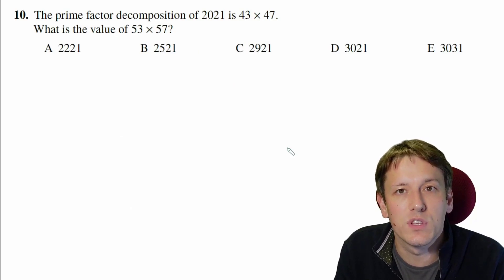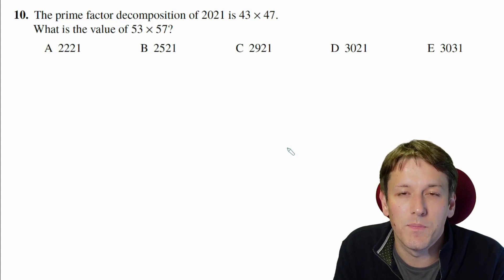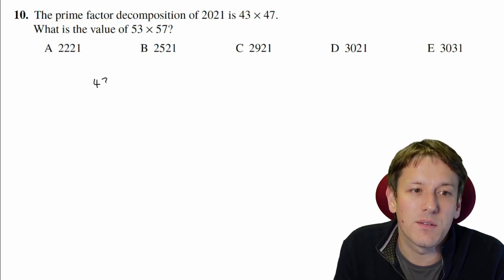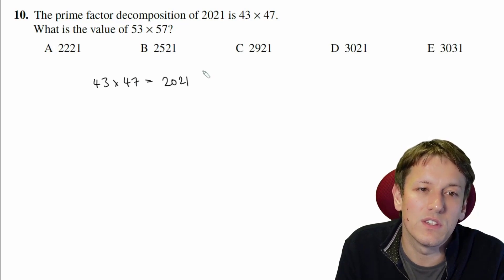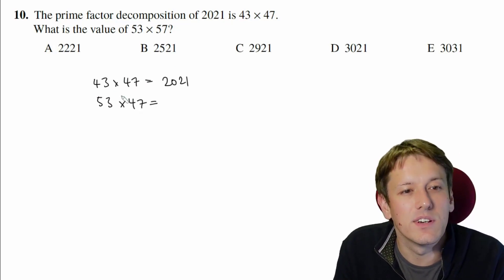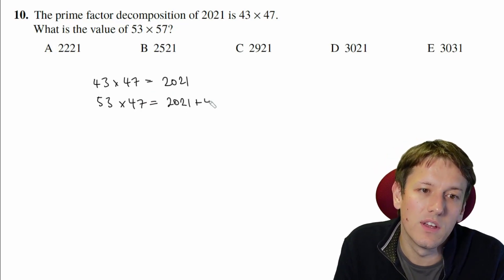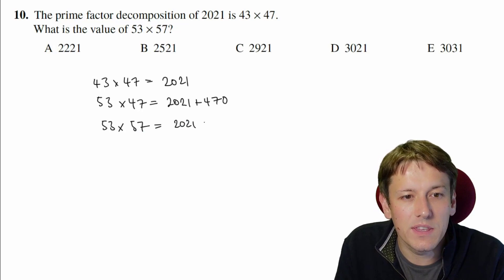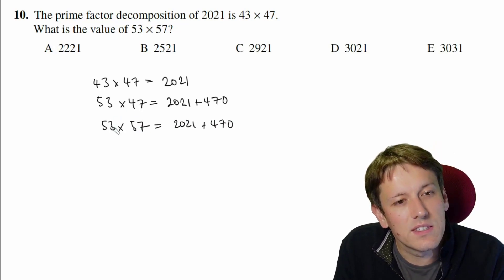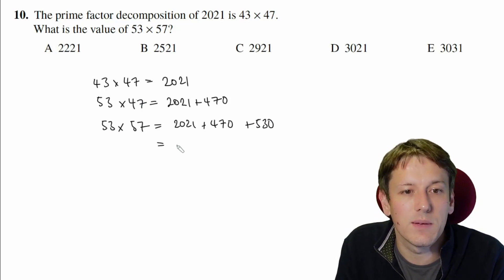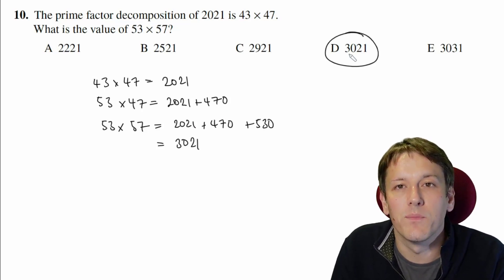The prime factor decomposition of 2021 is 43 times 47, and we're asked what's the value of 53 times 57? Now this isn't my favourite IMC question, for a reason I'll tell you at the end, but the way that they're intending for us to do this question is to say something like, well, we know 43 times 47 is 2021, and if we jump to 53 times 47, well that would be an extra 10 lots of 47 compared to 43 times 47. So that would be 2021 plus 10 lots of 47, which is 470, and then I could say 53 times 57, well that'll be the same as before. What we've got extra now is 10 lots of 53, we've got 57 lots of 53 instead of 47 lots of 53, so I'm also going to add on 10 lots of 53, which is 530. Now 470 plus 530 is 1,000, so we just need to do 2,021 plus 1,000, which gives us 3,021, and the answer is D.